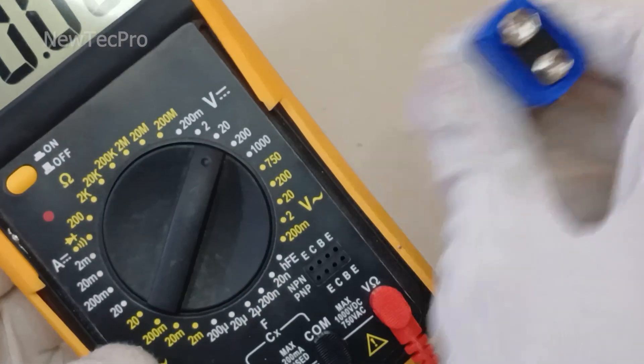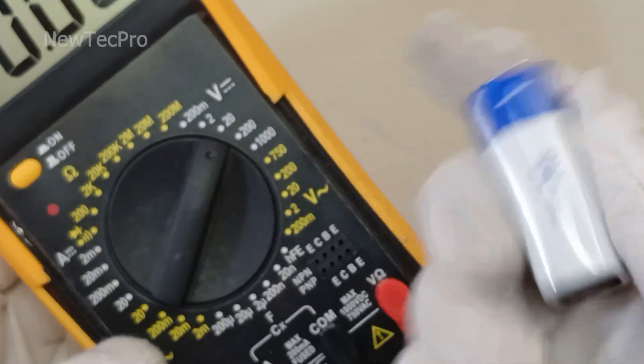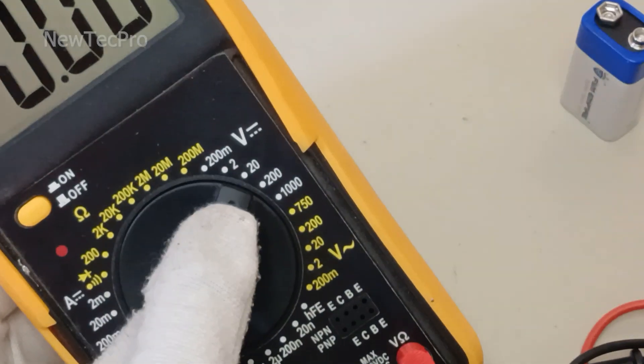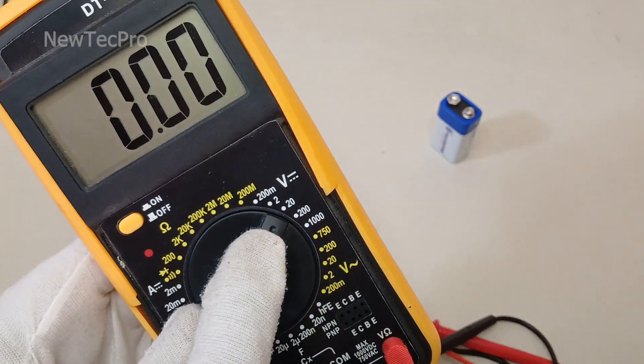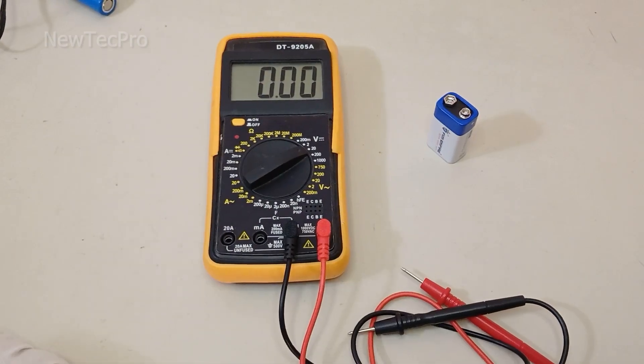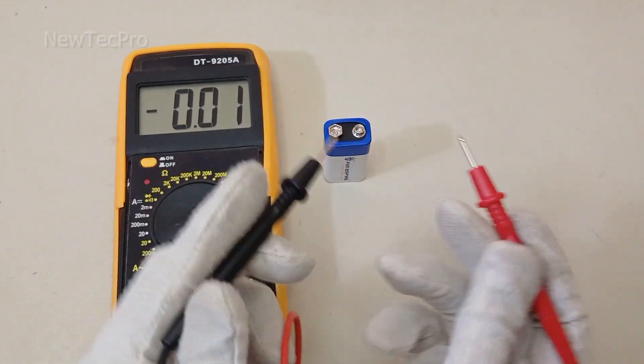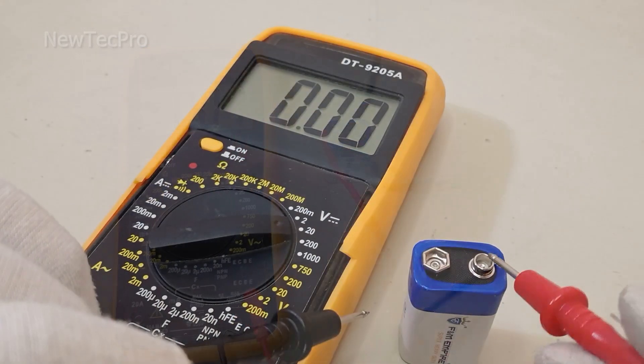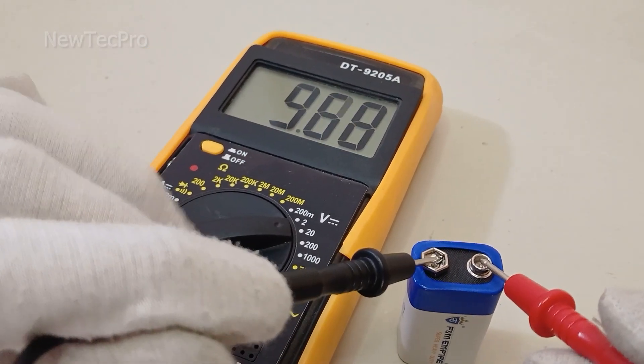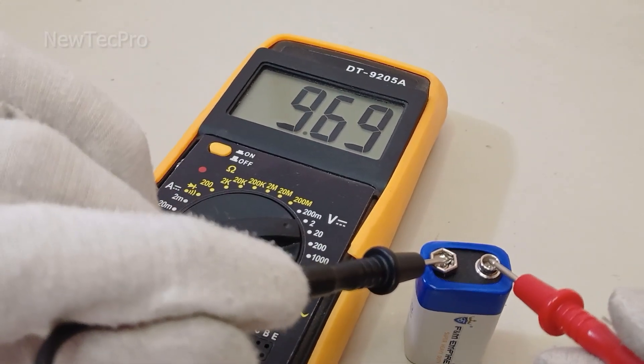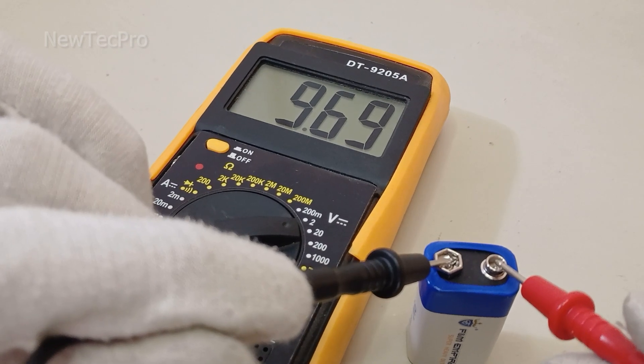Now this battery is 9 volts. You can see here, set to 20 volt. Okay, step four: measuring the voltage. As you can see, positive, negative. You can see here 9 volt.